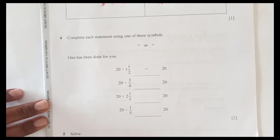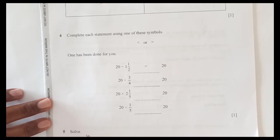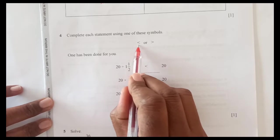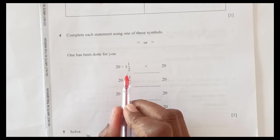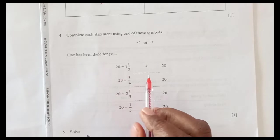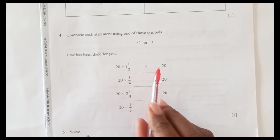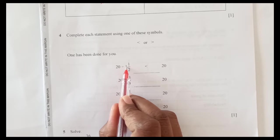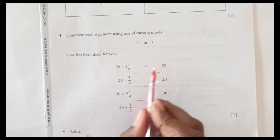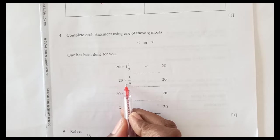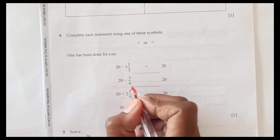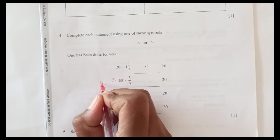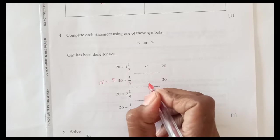Number 4: complete each statement using one of these symbols. We have less than or greater than. One has been done for you, meaning this first one is done here. So 20 divided by 1 and a half is less than 20. This is 20 times 3 over 4. If you see 4 times 5 is 20, so 5 times 3 is 15. So 15 is less than 20, this is going to be less than.